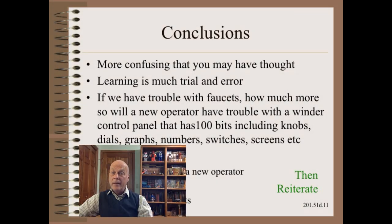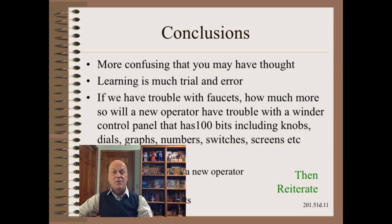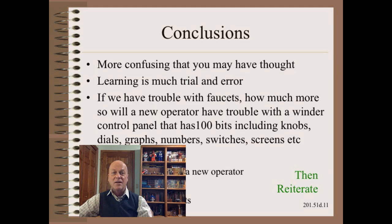I hope I've made it quite clear with these examples of how needlessly confusing consumer controls are. Lots of trial and error and frustration. Sometimes we just give up, as visitors to my home do when they try and turn on the TV. Our web machine controls are often as bad or even worse. The simplest modern winder may have hundreds of knobs, dials, switches, numbers, pages, and other control and display elements.